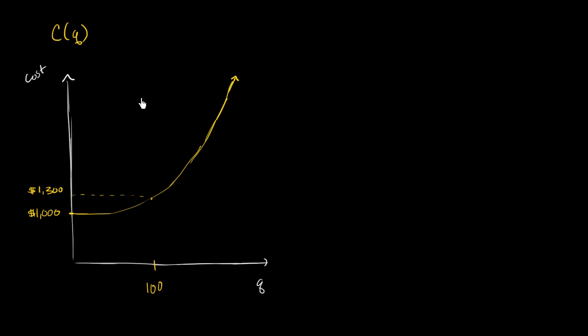I go into a lot more depth on things like cost functions in the economics playlist. But what I want to think about in the calculus context is what would the derivative of this represent? What would the derivative of c with respect to q, which could be also written as c prime of q, what does that represent?